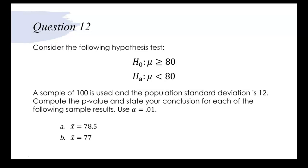A sample of 100 is used and the population standard deviation is 12. Compute the p-value and state your conclusion for each of the following sample results and our alpha is going to be 0.01. So we have two different parts of this problem. The first part our x-bar will be 78.5 then our x-bar will change and become 77.